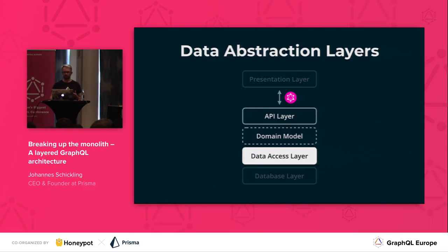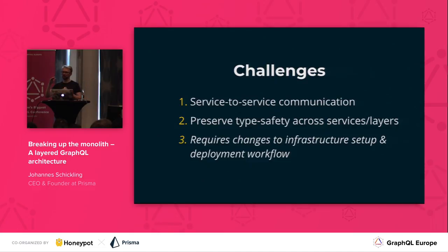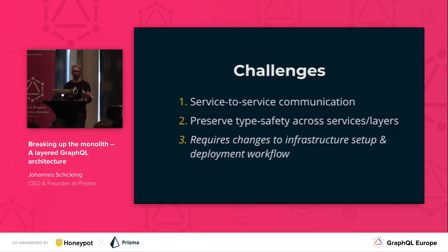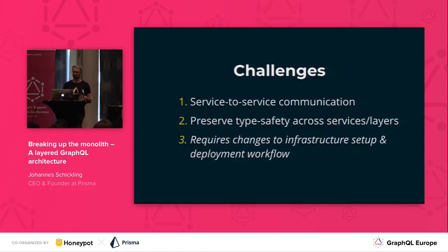Let's take a look at some of the challenges when we break up the monolith into different layers and different services. One is that if these are different infrastructure components, we need to communicate between them — we don't just have a variable we can use. So this is all about service-to-service communication. We want to build a system where we don't lose a great developer experience or type safety across these, though this does introduce more infrastructure setup.